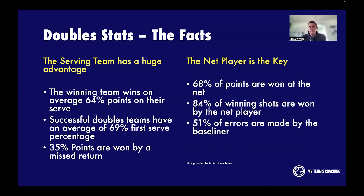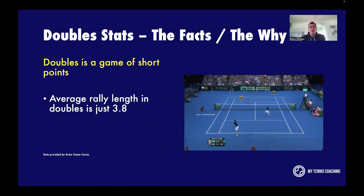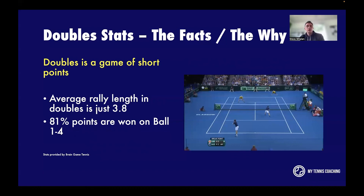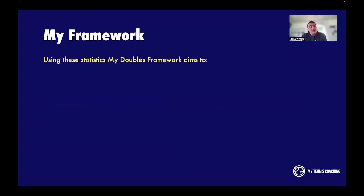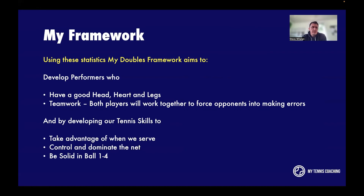Doubles is actually a game of short points — the average rally length for doubles is just 3.8 shots, and 81% of points are won between balls 1 and 4. If you're getting involved in long, drawn-out rallies in doubles, somebody's not doing their job right. We're going to use these stats to develop a doubles framework, develop tennis players who perform well, and look at tennis skills as well as head, heart, and legs. We'll work as a team with your partner to get the win, force opponents into mistakes, take the advantage when serving, control and dominate the net, and be really solid in balls 1 to 4.